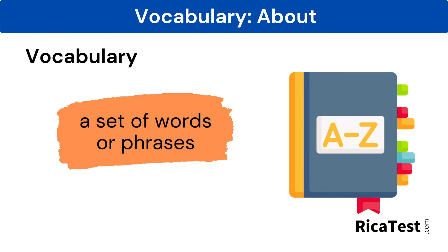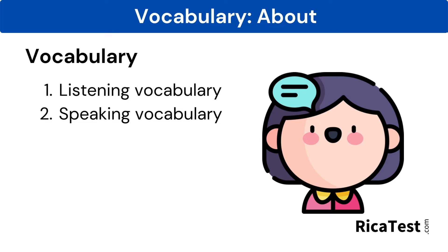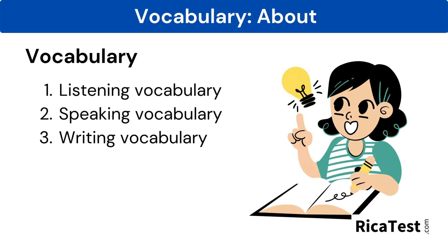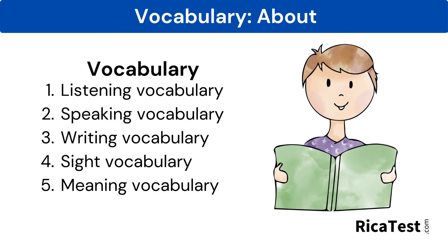Vocabulary is a set of words or phrases, and there are five types of vocabulary. These include listening vocabulary, which are the words you understand while listening to others speak; speaking vocabulary, which are the words you use when you talk; writing vocabulary, which are the words you use when you write; sight vocabulary, which are the words you can read aloud — similar to sight words, which are words we read as whole units; and meaning vocabulary, which are the words you understand while reading.